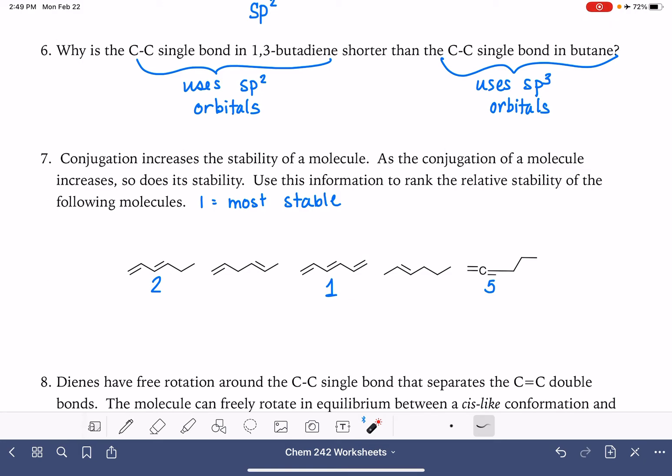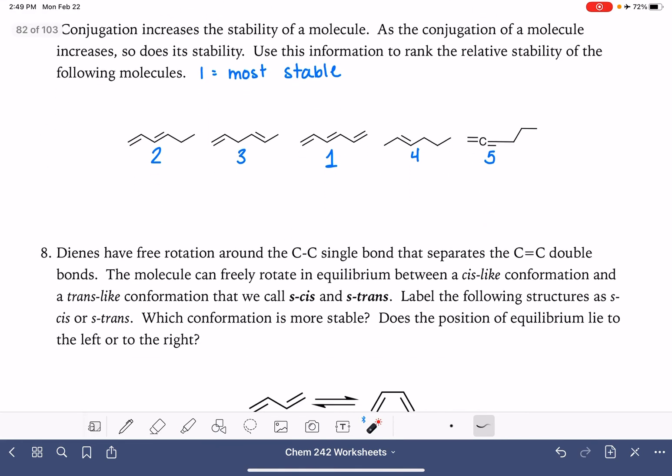However, double bonds in general are more stable than single bonds, so having more double bonds is better than having only one double bond, even though these double bonds aren't conjugated.